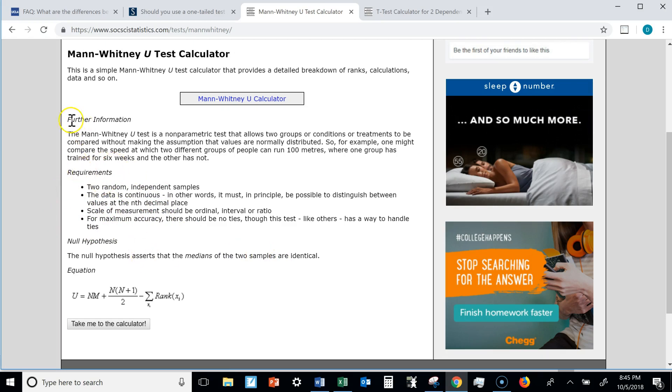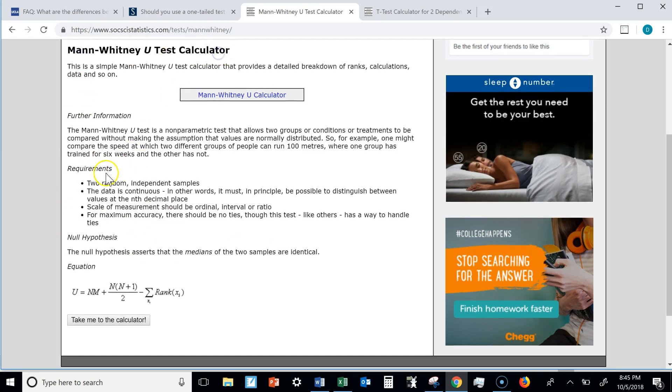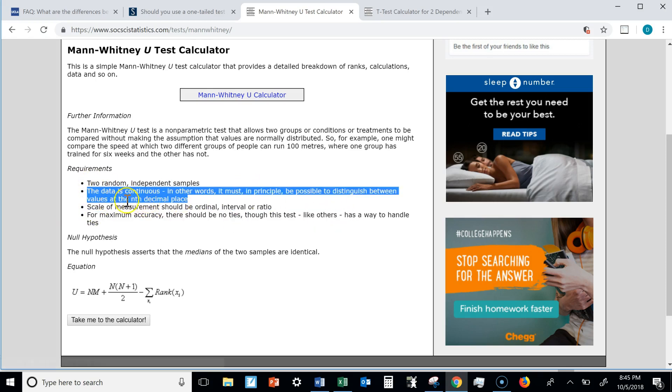You can explain that you used, you chose this test because you had two random independent samples. You weren't testing a single group twice, it was two different groups. You can talk about the data being continuous, an interval scale, if you want to go look that up. And oh, here's the interval scale. This is a different assumption, continuity.